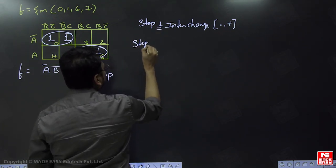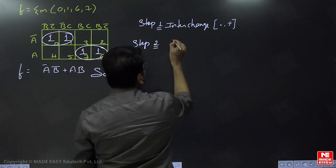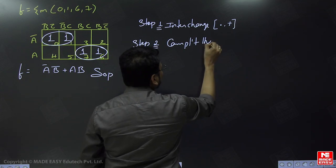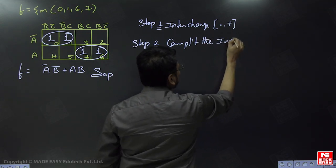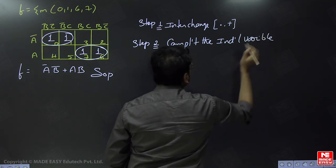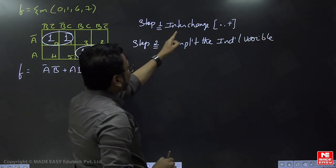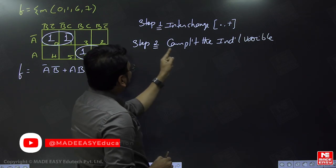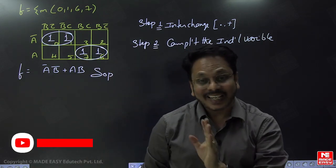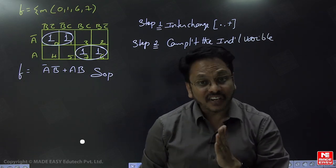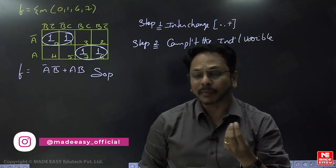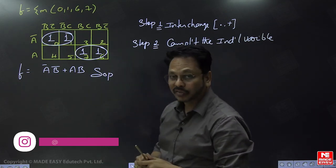Step two: complement the individual variable. So the two changes are — step one, interchange the operator, and step two, complement the individual variable. These two changes you should make in the K-map first, and then in that modified K-map you represent the converted POS form.